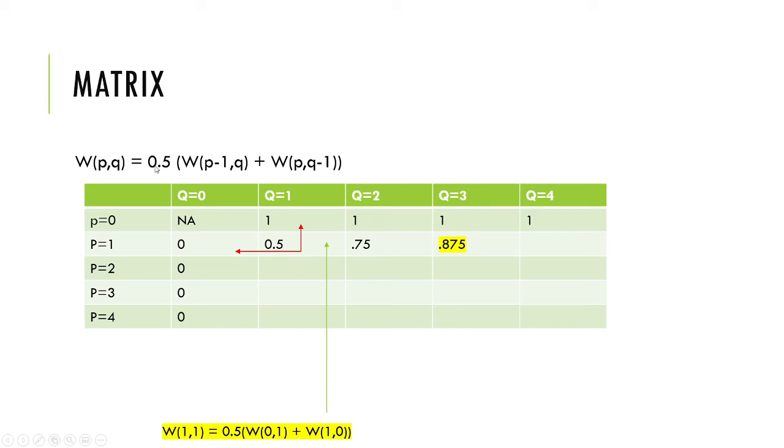Now it becomes straightforward application of this equation. For any point, you need to look at the point above and point on the left and just average them using 0.5 times this equation. Look at this one—I've worked it out: 0.5 times 0 and 0.5 times 1, so this becomes 0.5.